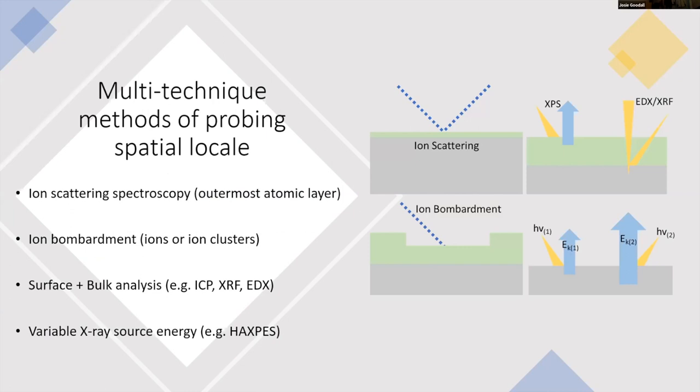We'll be talking about some of the different ways we can probe the spatial workup. I'm looking at mainly four kinds of techniques today: ion scattering, ion bombardment, using a combination of surface and bulk techniques, and also using variable XPS source energy. As you've already heard from David, it's easy to vary the probing depth when you vary the source energy.